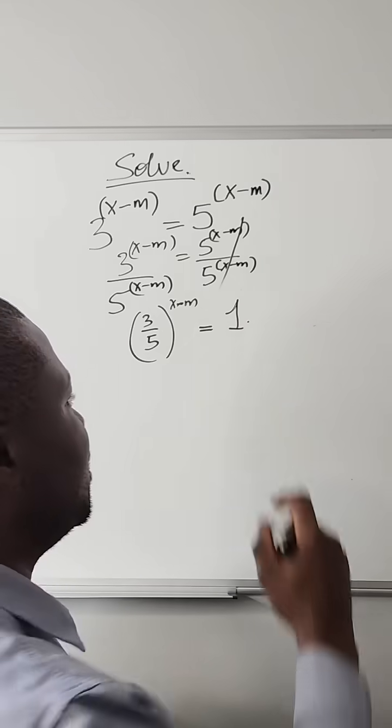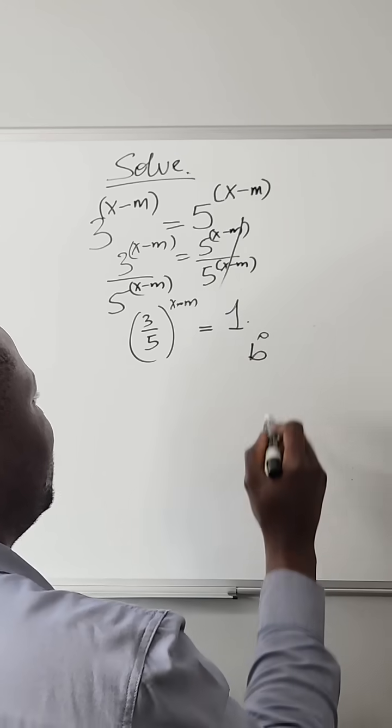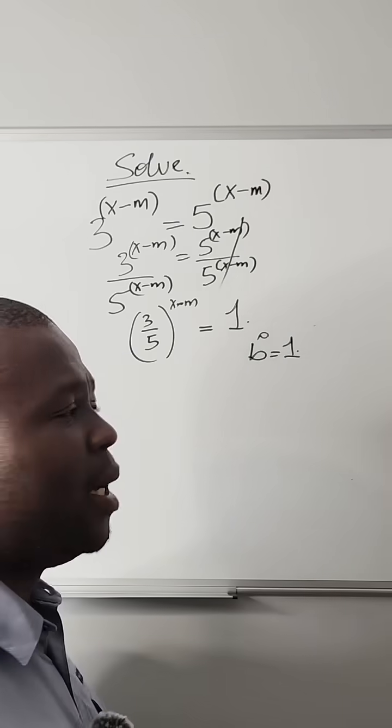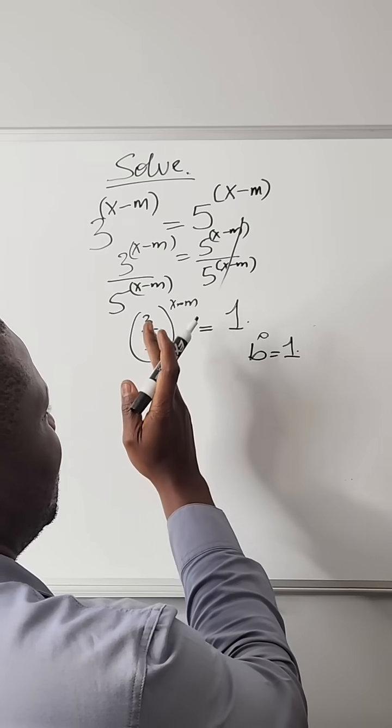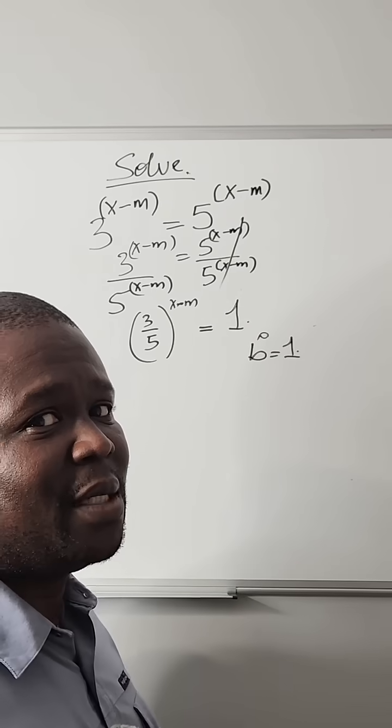Now we know that anything raised to power 0 is equal to 1. And now we're trying to make this side, left-hand side, to be equal to the right-hand side.